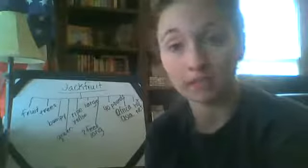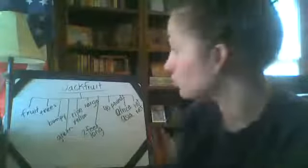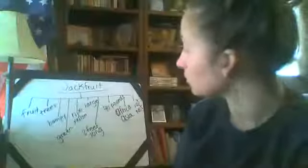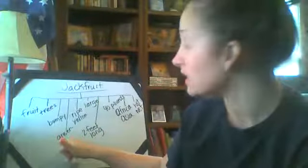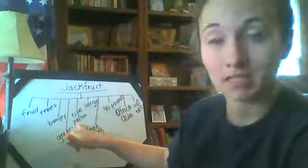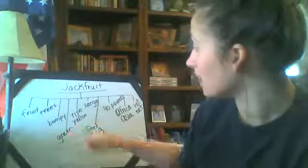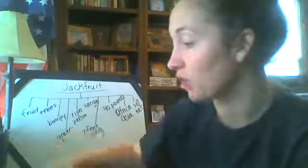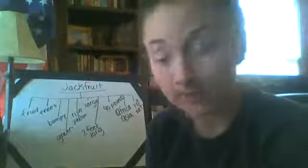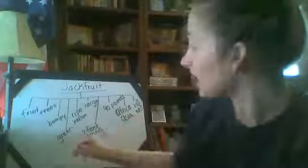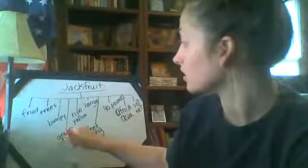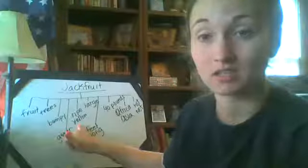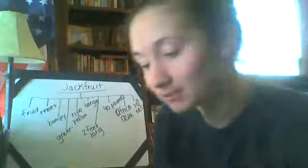Question four: what is this text mostly about? That's the main idea question — it's all about the jackfruit. Question five: how much can just one jackfruit weigh? That was one of our details too — 40 pounds. Question six: what did you learn from the jackfruit? You could write a sentence or two — 'I learned a jackfruit grows on trees,' or 'when it's young it's green and then when it's ripe it turns yellow,' or 'I learned a jackfruit is large and can grow two feet long.' Question seven: discuss how jackfruit changes as it grows — it starts out green and then turns yellow, and it grows in size up to two feet long and 40 pounds.